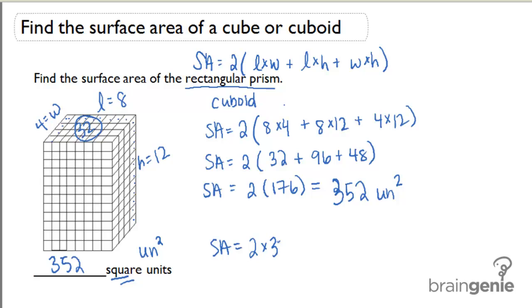Then the front of the prism is going to be 96 because 8 times 12 is 96, and so is the back. So that's simply 2 times 96. Lastly, the side is going to be 4 times 12, which is 48. So it's 2 times 48.